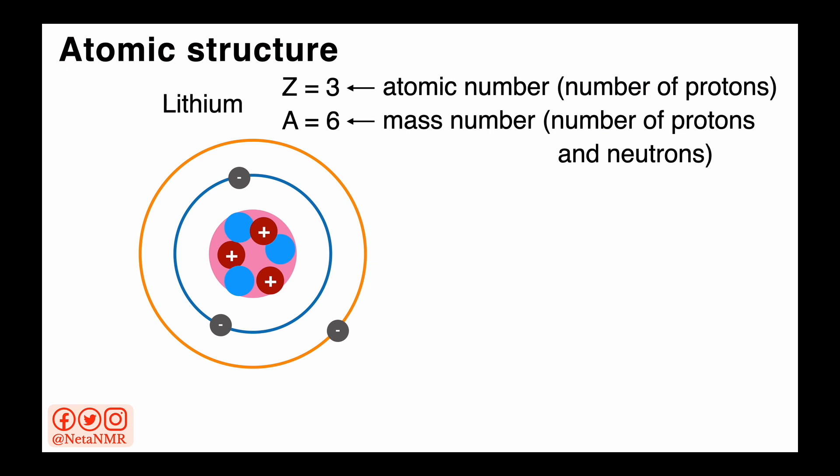This means there are 3 protons in the nucleus given by Z equals 3. The number of neutrons in the nucleus is A minus Z. So for lithium that is 6 minus 3, which is 3.